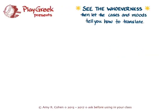So that's all the ways I can think of to help you understand and translate these clauses. The key is seeing the whoever-ness — realizing that you're looking at an indefinite clause — and then letting the cases and moods tell you how to translate. Most of the time you'll run into hoss-an and the subjunctive in these clauses, and then you just translate the indicative of the main clause in the usual way. But sometimes you'll need to recognize one of the other patterns, and as long as you realize that and you've got Hanson and Quinn's ideas about the different conditional sentences available to you, you'll be just fine.